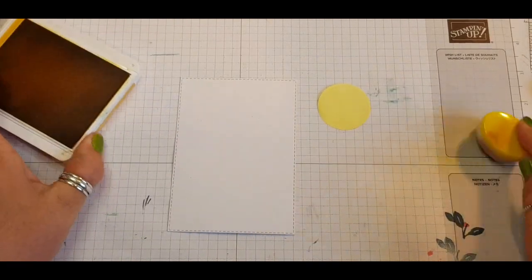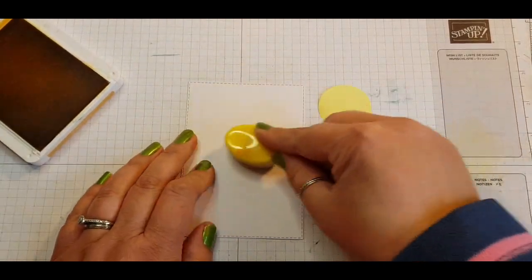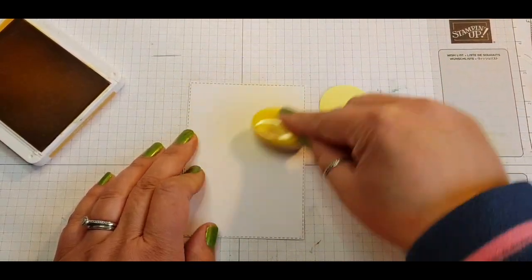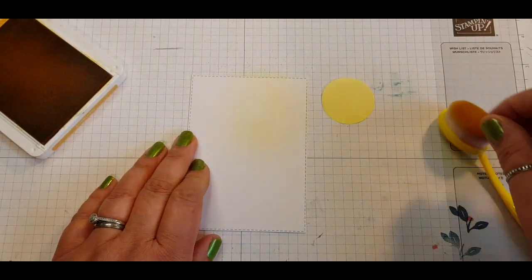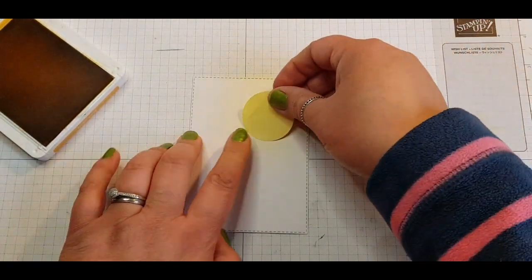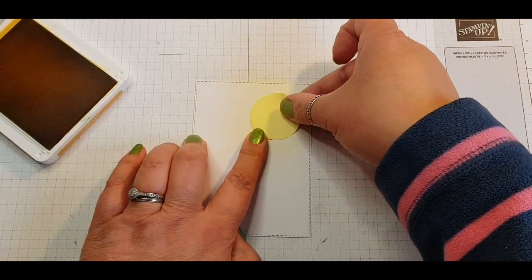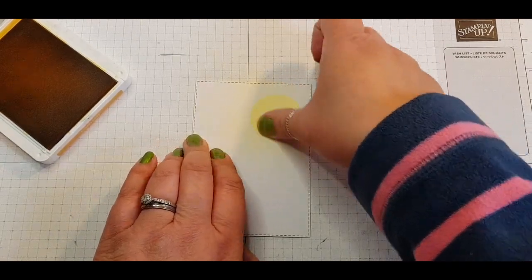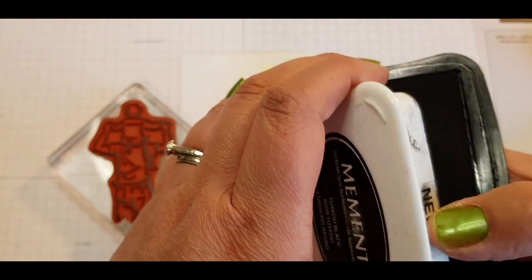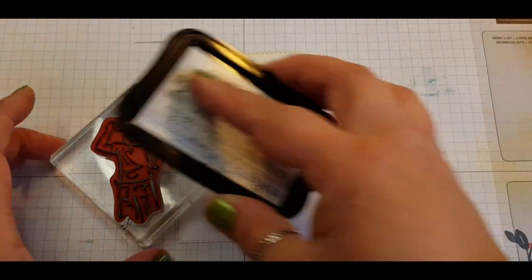Coming in with my blending brushes and using some Mango Melody. Laying down some initial color because I didn't want that stark white contrast after I take the mask off. So once I lay down the color I've put my post-it note on top and this is going to act as the Sun.